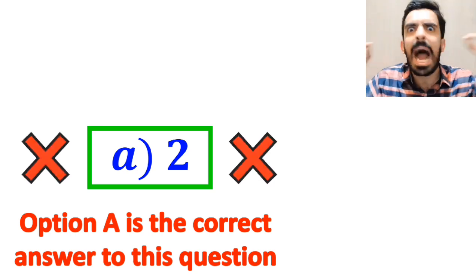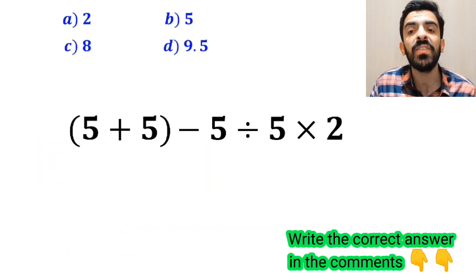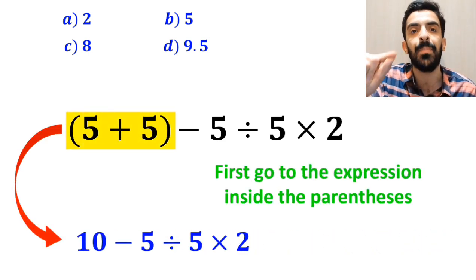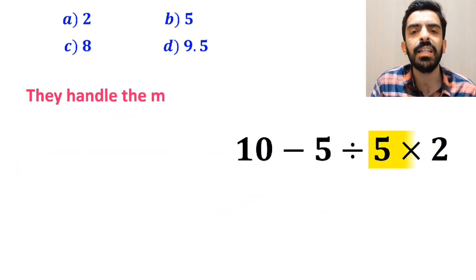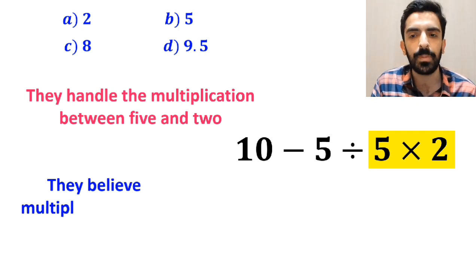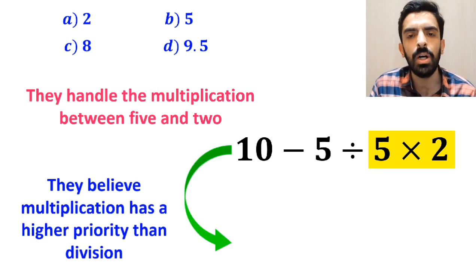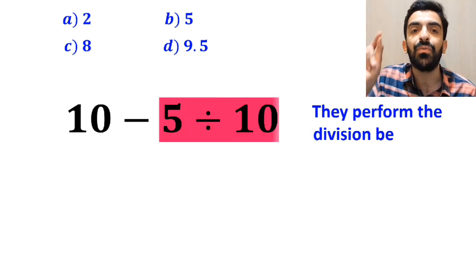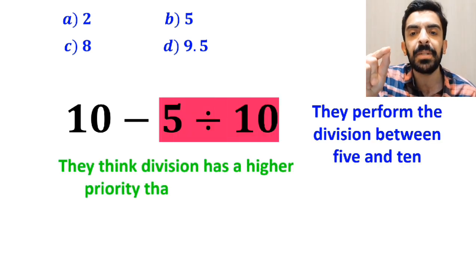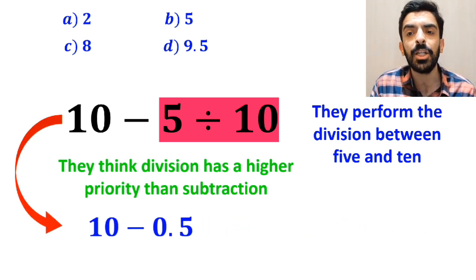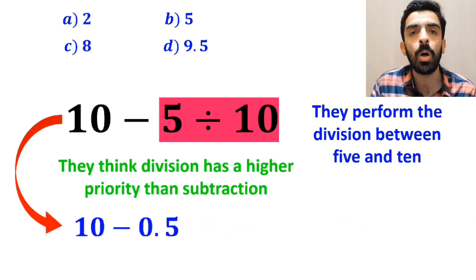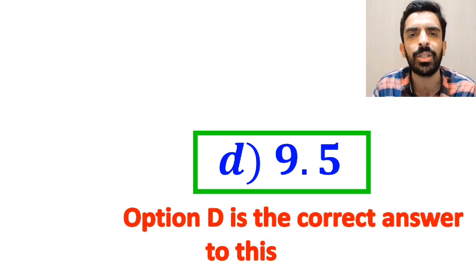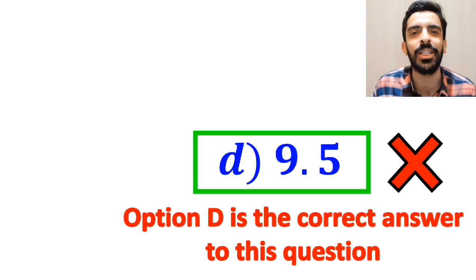Some other people, when solving this question, first go to the expression inside the parenthesis and write it as 10 minus 5 divided by 5 times 2. In the next step, they handle the multiplication between 5 and 2 first, because they believe multiplication has higher priority than division. So they write this as 10 minus 5 divided by 10. Then they perform the division, simplifying to 10 minus 0.5, which gives the answer 9.5. They conclude that option D is the correct answer. However, it's not the correct answer.